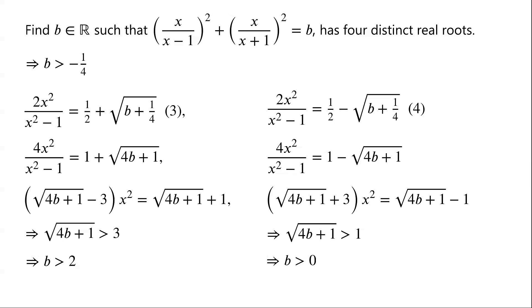Now we have derived that for the original equation to have four distinct real roots: b > −¼, b > 2, and b > 0. So overall, b must be greater than 2.